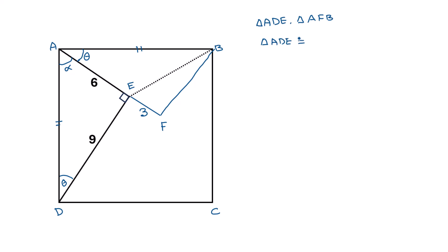So these two triangles are congruent by the Side-Angle-Side (SAS) theorem. Triangle ADE is congruent to triangle AFB, so AE is equal to FB. The length AE is 6 units, so FB is also 6. And as this angle is 90 degrees, this angle at F is also 90 degrees.